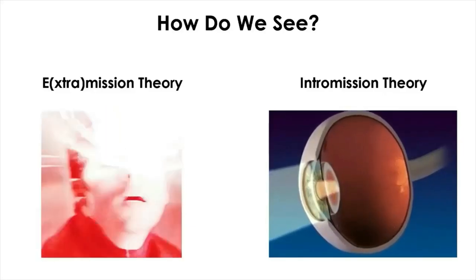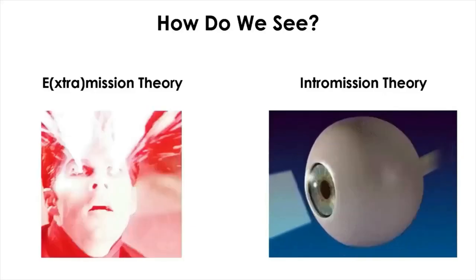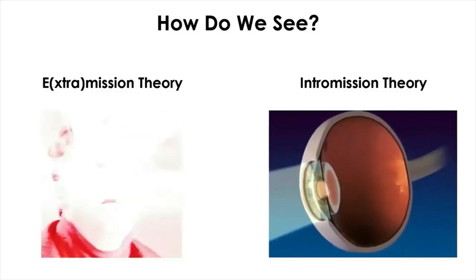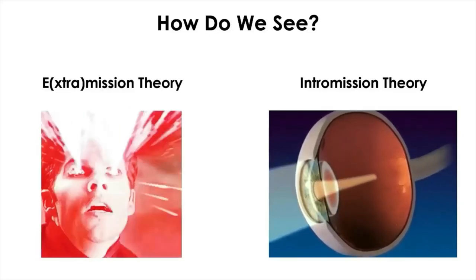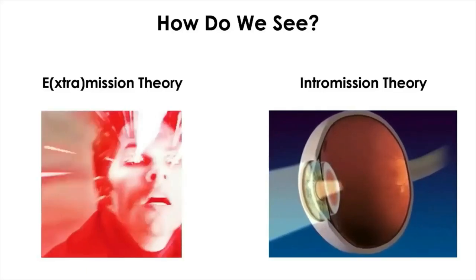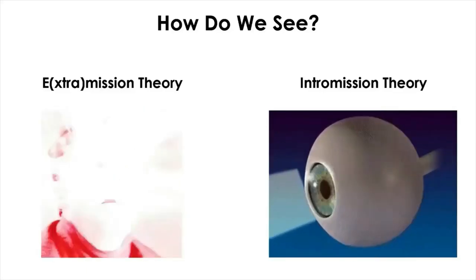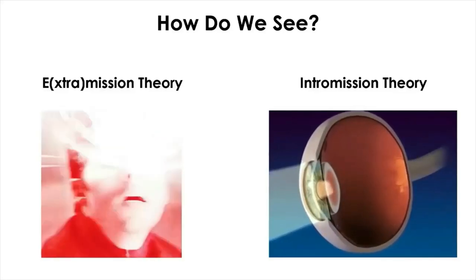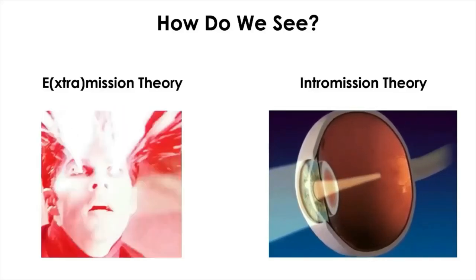First, the emission theory maintains that visual perception is accomplished by rays of light coming out of the eyes, and these rays of light are caught by visual objects. Greek philosophers like Plato believed that some sort of visual fire comes out of the eye, like the Cyclops from the X-Men.